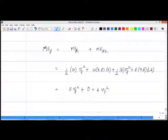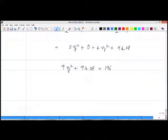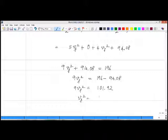Now let's equate the two sides. I get 9v_f squared plus 94.08 equals 196. What this gives us is that 9v_f squared is equal to 196 minus 94.08, and that'll end up being 101.92.